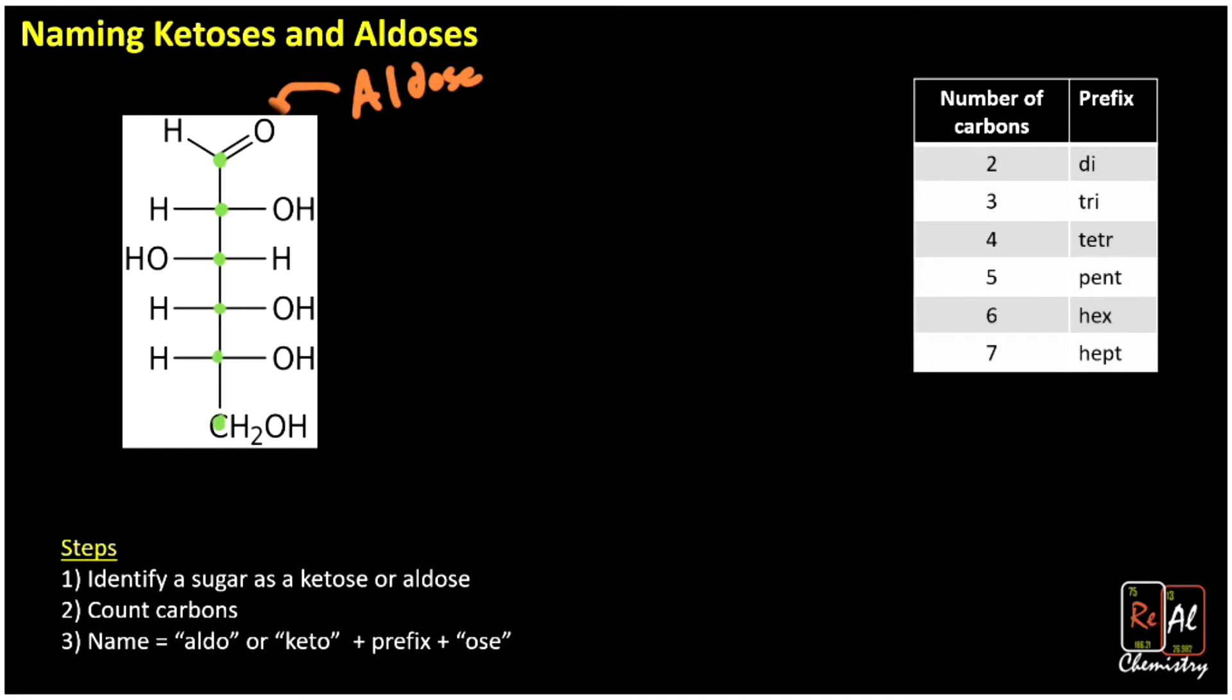So don't forget that last carbon there at the end. And so we go to our chart over here, which basically you have to memorize, but luckily it's pretty straightforward to memorize. You may already have it memorized. For six, we see that we use the prefix hex. So to name this, we're going to start with aldo. So it's an aldo. And then we're going to add the prefix. In this case, it's hex. And then we'll add -ose.